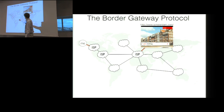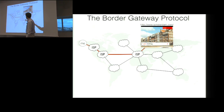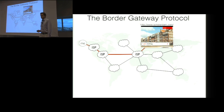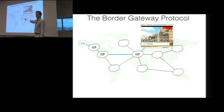ISPs use BGP to transfer routing information with one another. For example, this ISP that I'm connected to here forwards routing information to its neighbor, telling this neighbor about me and how to reach me. And this ISP then forwards that information to other ISPs, which forward it and so on, until every ISP on the internet knows about me. Given this routing information, the iAmsterdam website can transfer its packets over this ISP, then over the Atlantic, then to this ISP in Seattle, and finally to me.